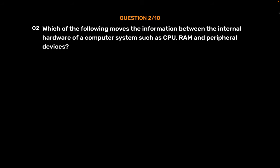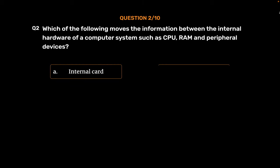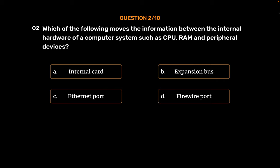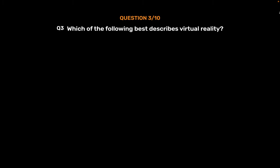Question No. 2. Which of the following moves the information between the internal hardware of a computer system such as CPU, RAM, and peripheral devices? Option A: Internal Card. Option B: Expansion Bus. Option C: Ethernet Port. Option D: Firewire Port. The correct answer is Option B.